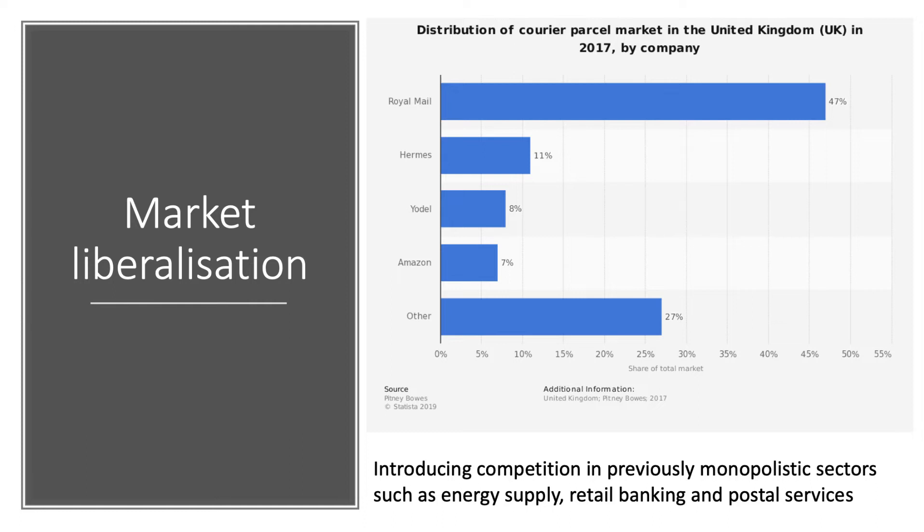M stands for market liberalisation. Liberalisation — you can spell it with an S or with a Z — is where you introduce extra fresh competition into a previously monopolistic market in an attempt to bring prices down, improve efficiency and improve outcomes for consumers. It's a supply side policy. My example is the parcel industry. The Royal Mail until a few years ago effectively had a monopoly in this market, and still has 40%+ of the courier parcel market in the UK.